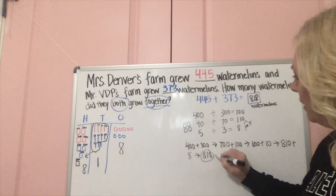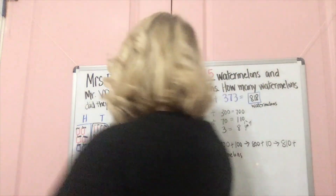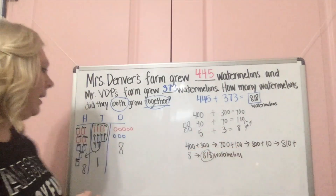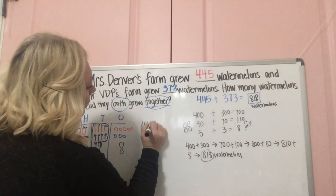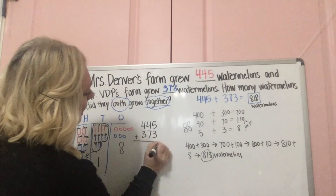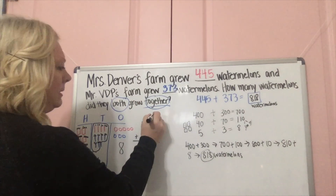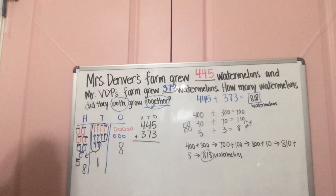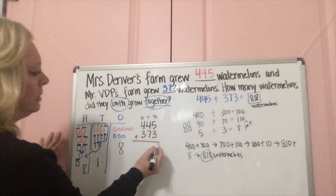818 watermelons. The last way I'm going to show you is a way that a lot of you like to try, but maybe haven't fully mastered yet — so I'll show you how it's done. I'm going to put my numbers right here: 445, and line them up one on top of the other — 373 — and draw a line. I'm going to add the ones this way, add the tens this way, and add the hundreds that way. We've got regrouping in the middle, so I'll show you how to handle that.